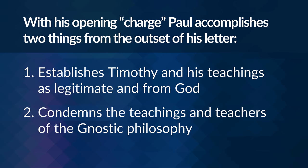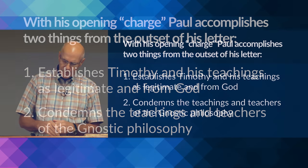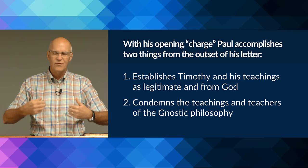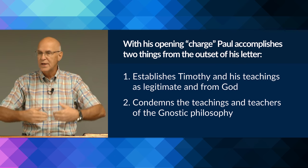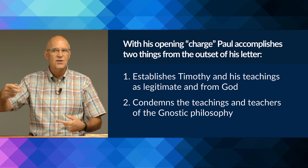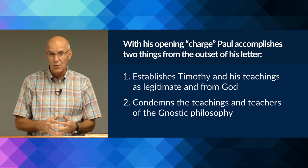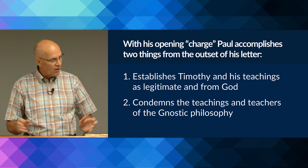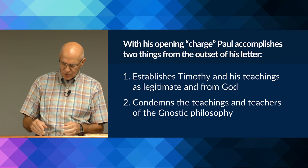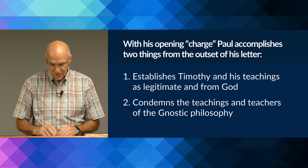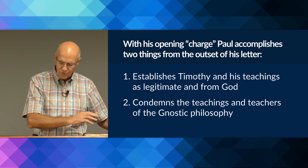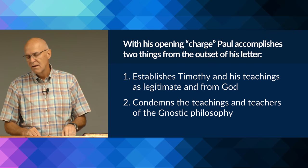In the first verse, Paul introduces himself as an apostle of Jesus, in the circle of twelve, by the command of both God and Jesus. The idea is that he is not some sort of self-appointed apostle or self-appointed teacher, as the teachers causing problems in Ephesus were. He's a legitimate teacher, legitimately called by God, equal to the other apostles. This establishes his authority, the authority of his teachings, sourced from Jesus and from God.